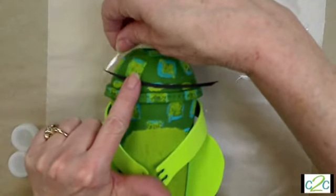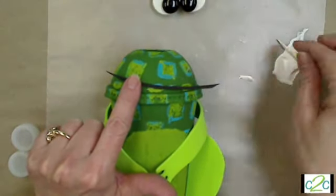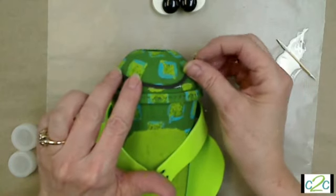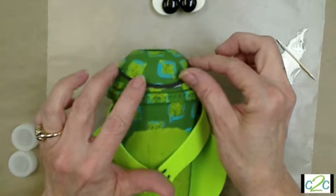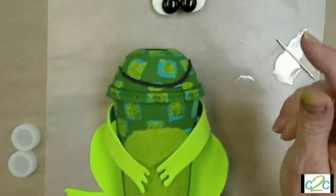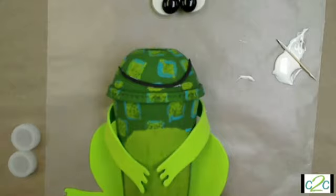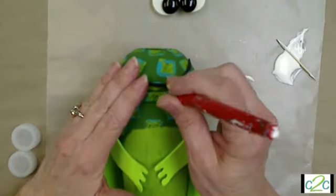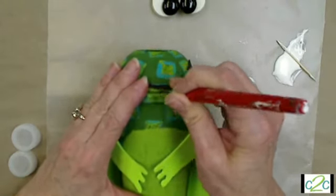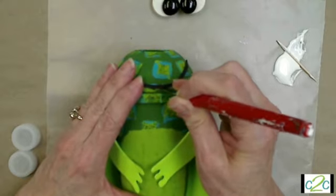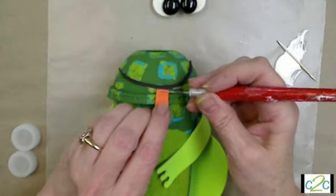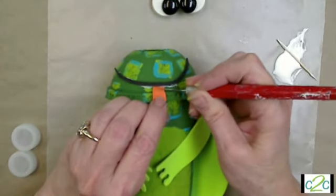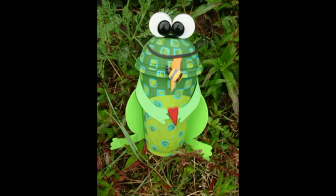A little bit more glue under there. And if you want the tongue to stick out you're going to put a little hole right below and stick that craft foam tongue right into that hole, push it in till you get it where you want. And you might even put a little bit of glue underneath.